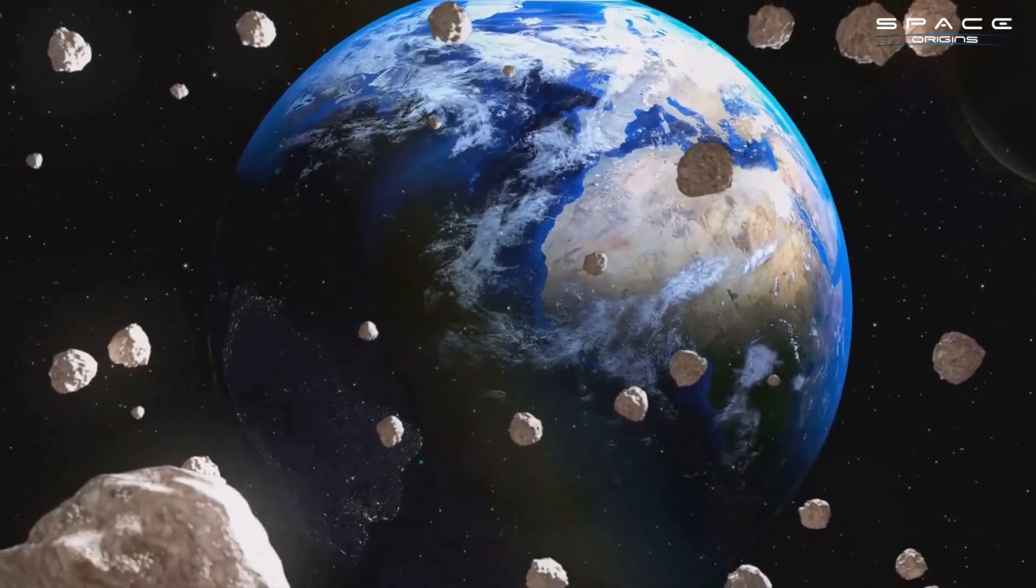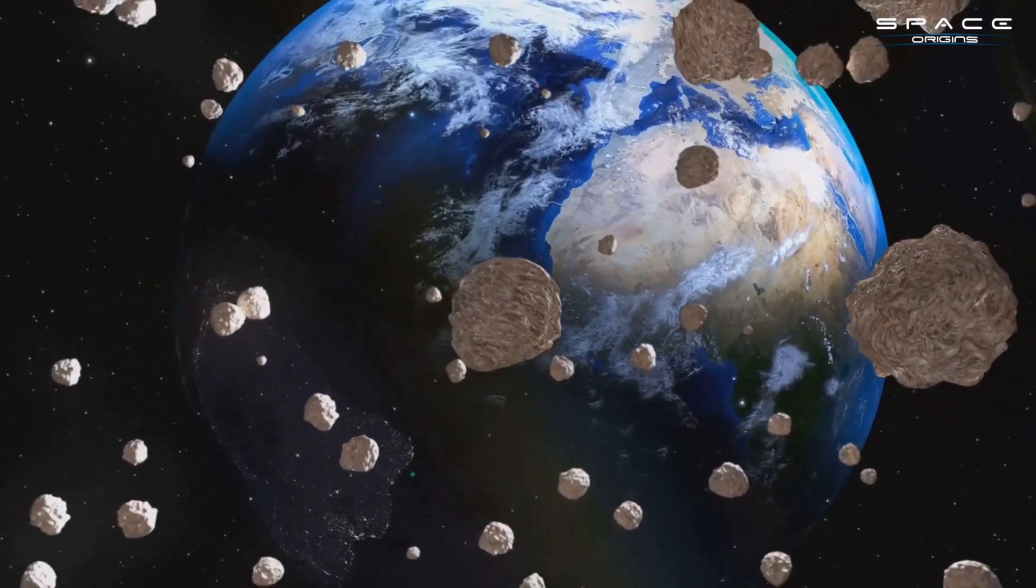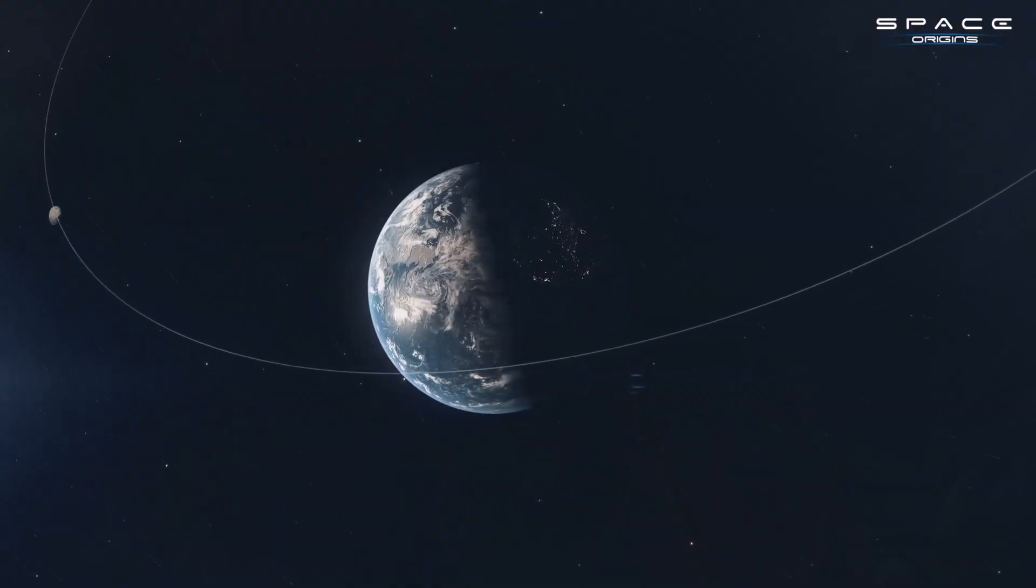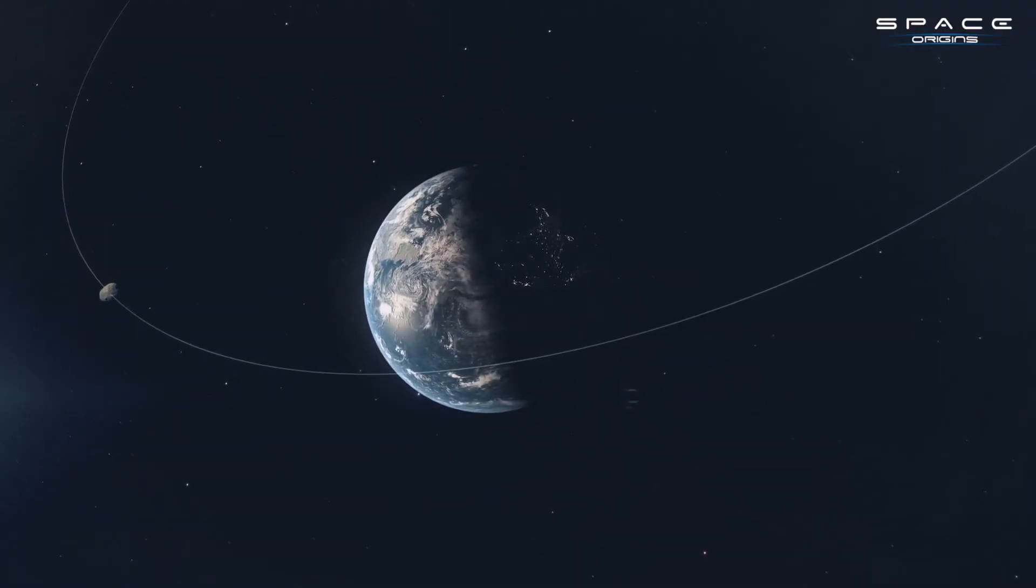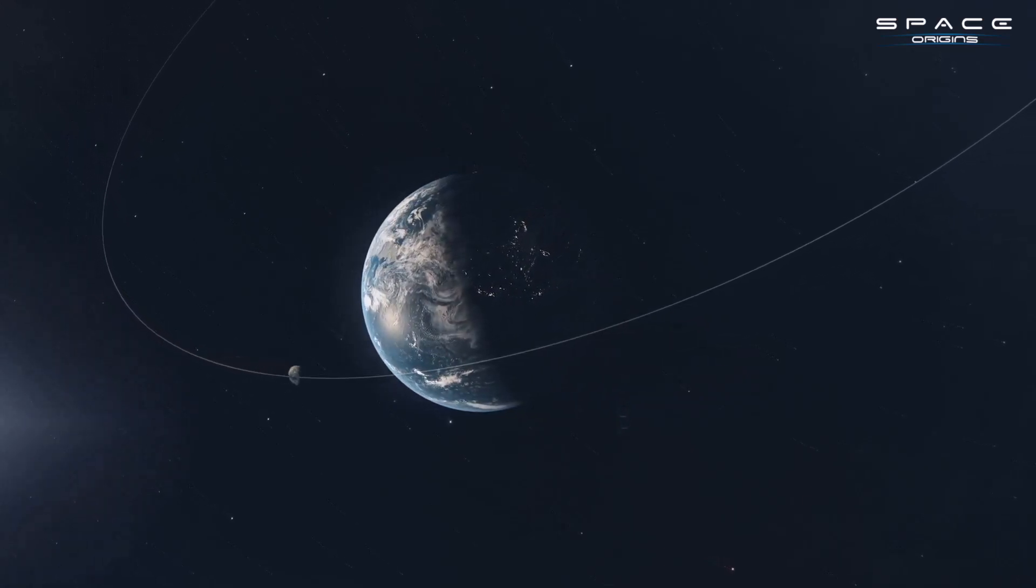And what makes these asteroids particularly concerning is their orbits. Some of them, particularly the ones known as Atens, have orbits that bring them dangerously close to Earth. Their position in the sunlit sky makes them practically invisible to our telescopes.